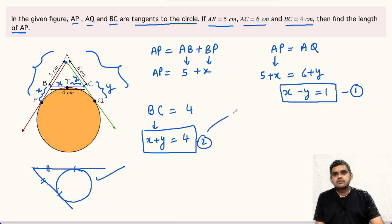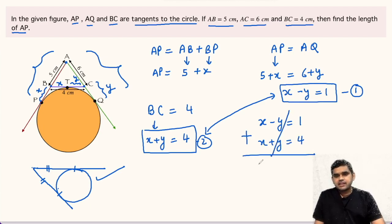Now we will solve these two equations to find the value of X. X minus Y equal to 1 and X plus Y equal to 4. If we add them, Y will vanish and 2X will be equal to 5. From here X will be 5 over 2, that is 2.5 centimeter.